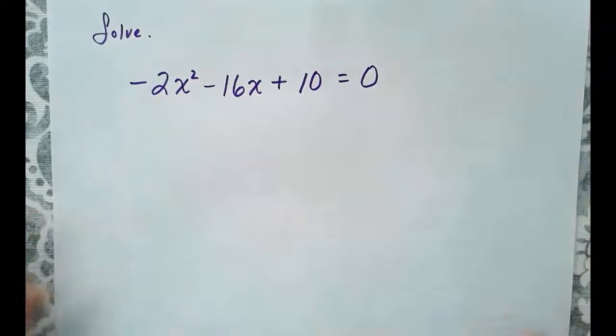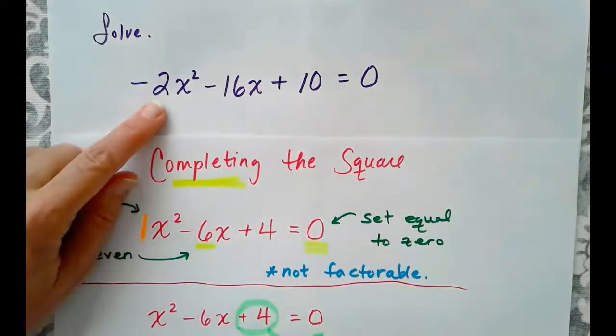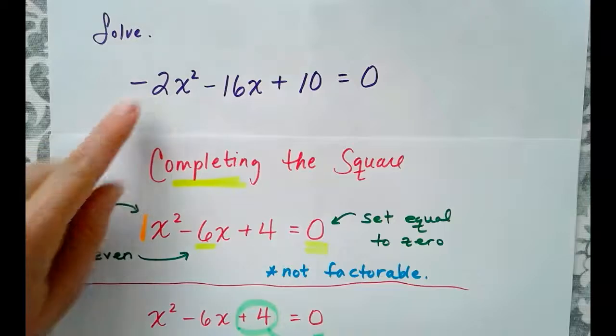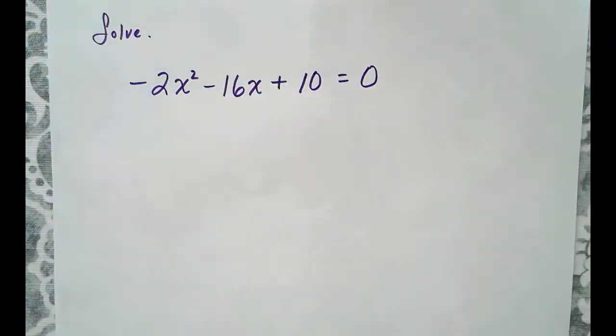Let's do it one more time. So, here we have -2x² - 16x + 10. So, if we look back at our previous problem, do we have a 1 up front? No, but do we have a greatest common factor that can easily come out? Yes.